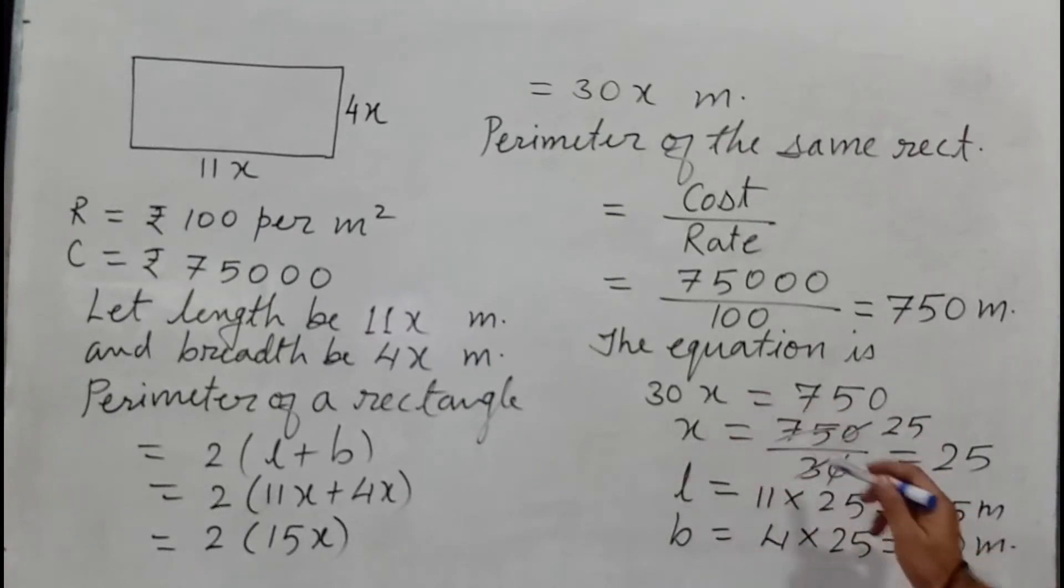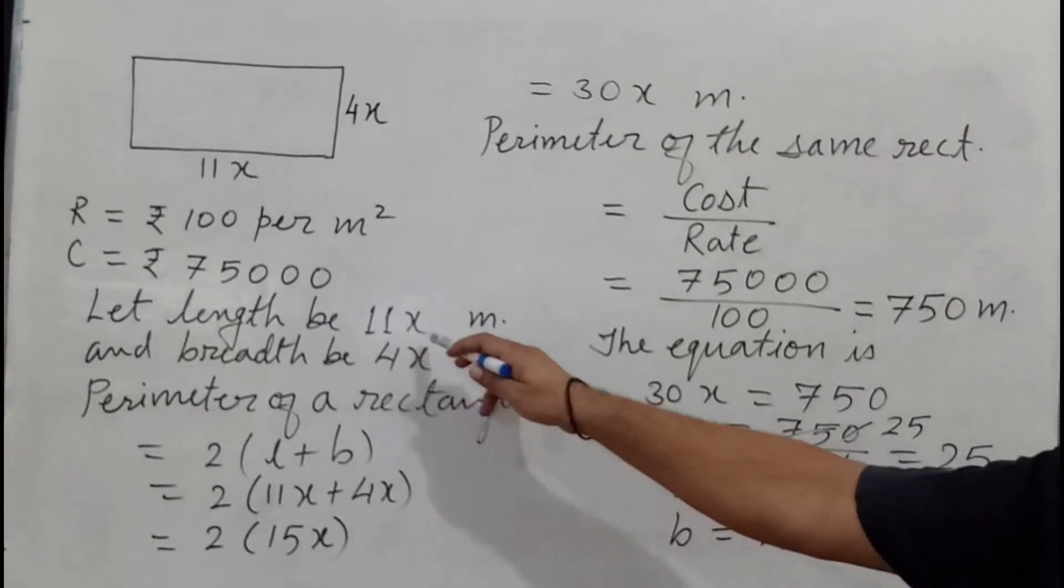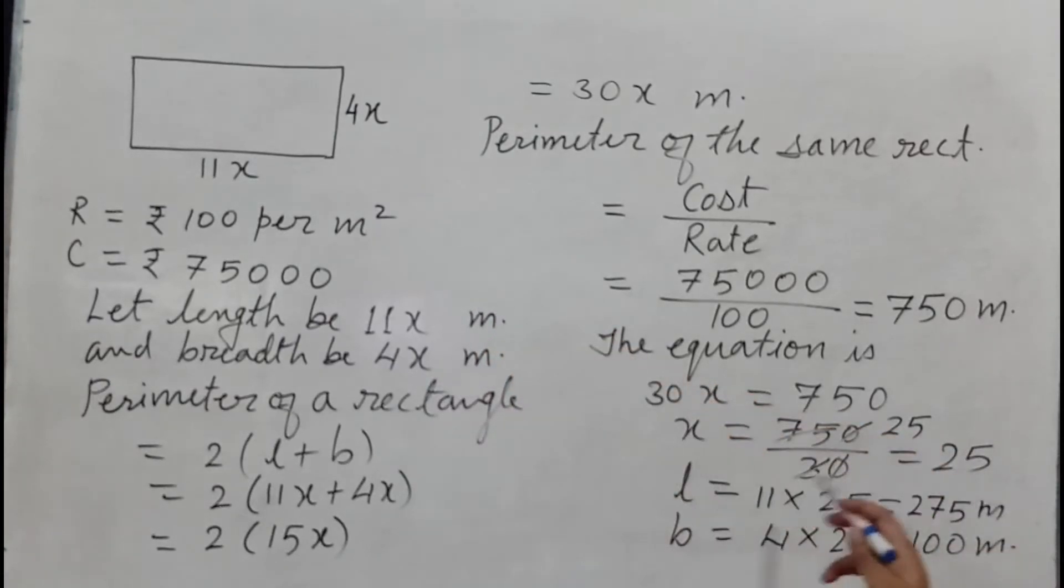750 upon 30 becomes 25. So length equal to 11 times 25, because 11x is the length and value of x is 25. So 11 times 25 becomes 275 meters. And breadth is 4x, so it is 4 times 25 equal to 100. So breadth is 100 meters.